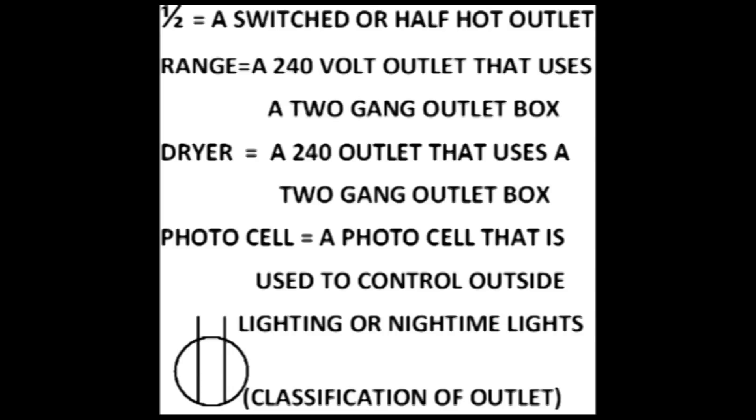Range—that's a 240 outlet and usually requires a two gang box. Dryer—again that's a 240 outlet and usually requires a two gang box. Photo cell—that's pretty basic. It's a photo cell and it controls outside lighting. All of these devices or outlets will start with the basic outlet symbol and be followed with the tags I just reviewed.